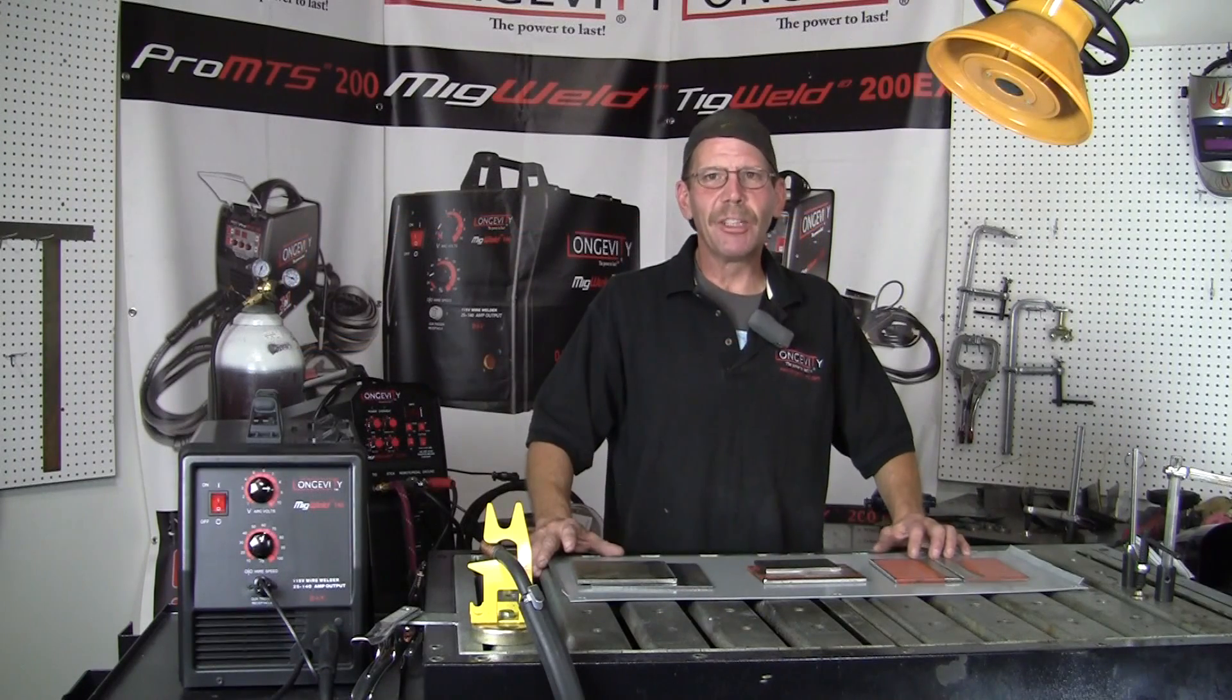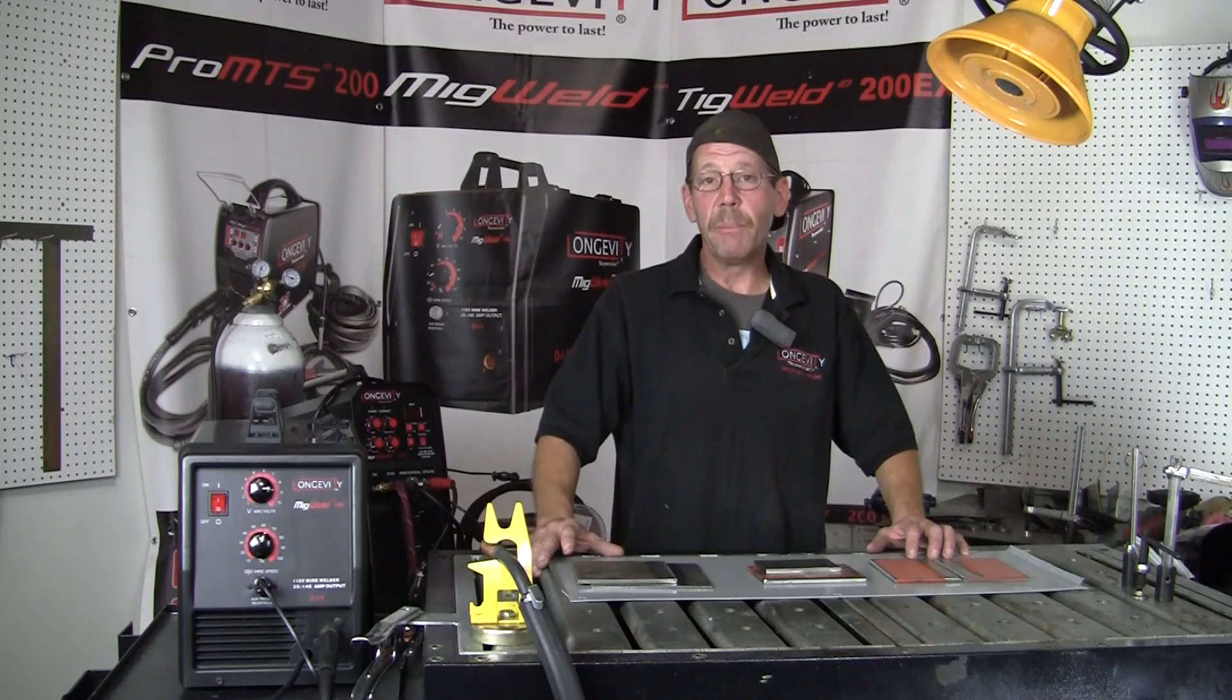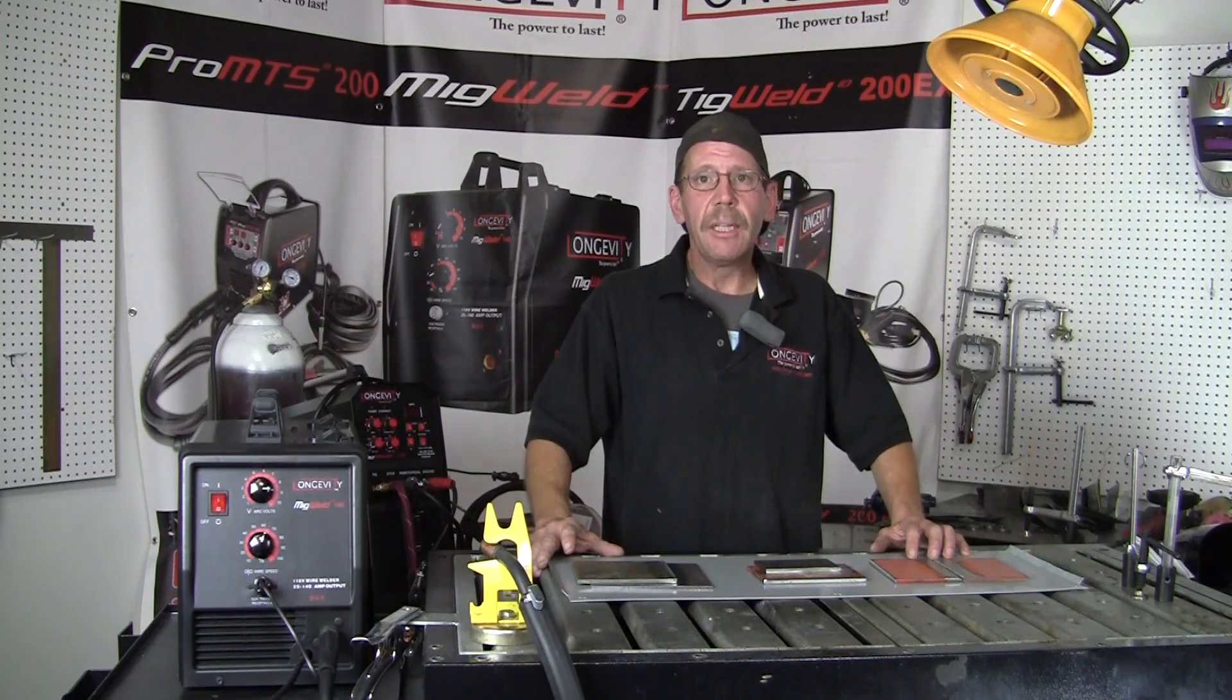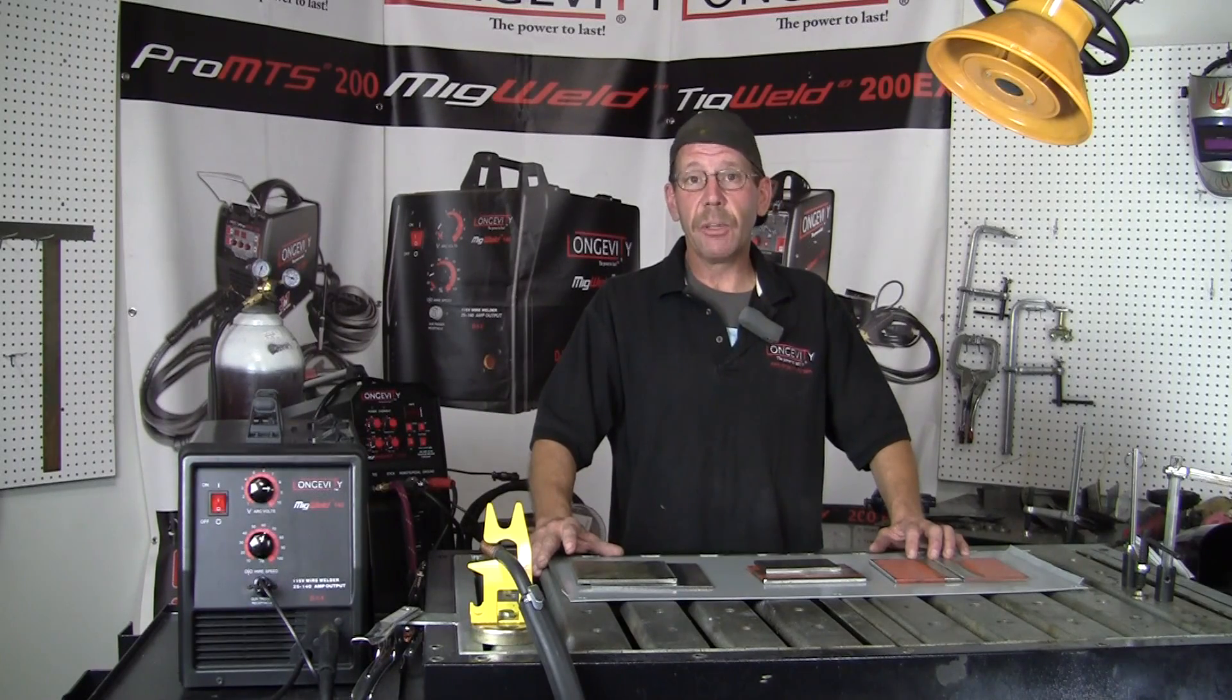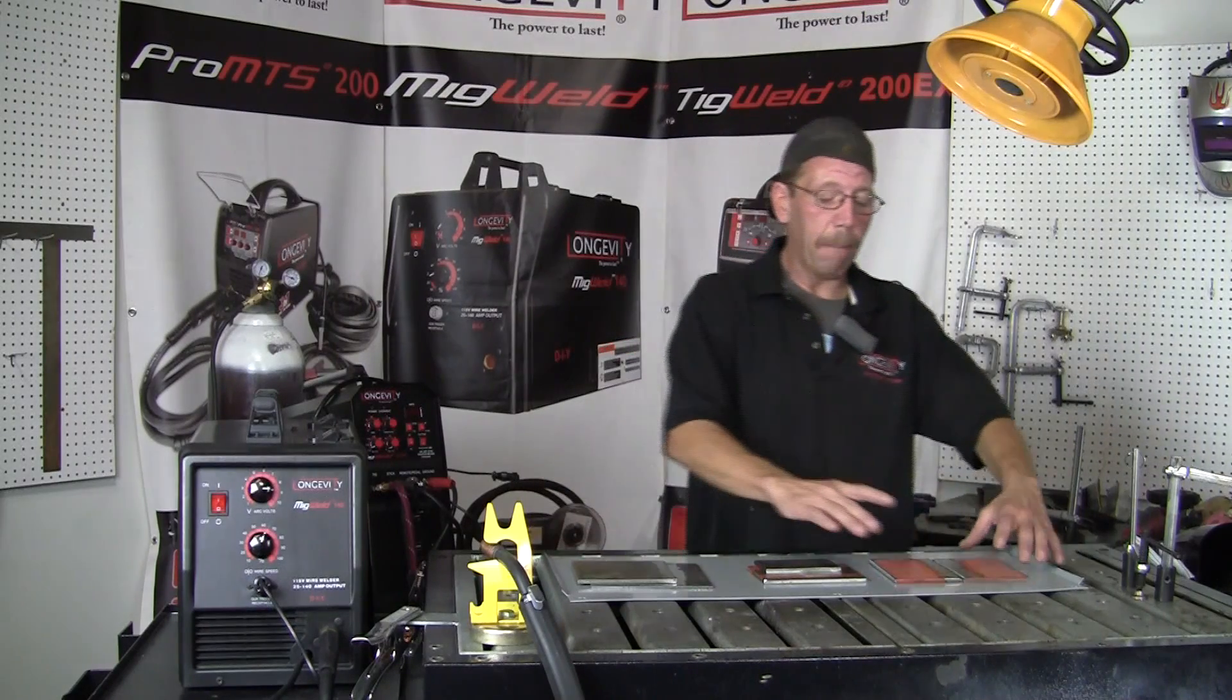Hi, this is Rob with Longevity Learning Labs. Today we're going to be showing you some basic welding with the MIG Weld 140. It runs on 110 current and you have the choice of either flux core wire or gas CO2. What we're going to be doing today is a butt weld, and then a T weld or fillet weld, and a lap weld.